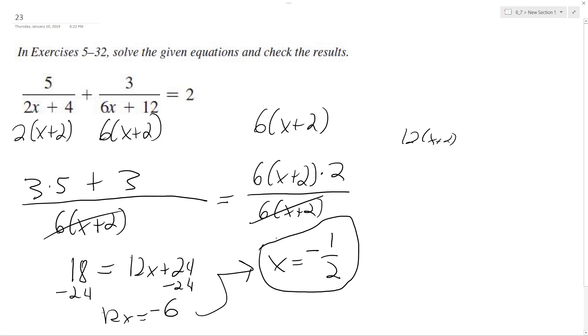So here's our solution, but we want to test it. So let's do that. So we'll have 5 over 2 times negative 1 half plus 4 plus 3 over 6 times negative 1 half plus 12 equals 2. Let's check that. So this ends up being 5 over negative 1 plus 4 plus 3 over negative 3 plus 12.